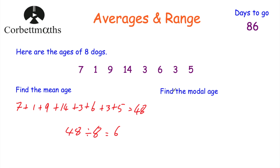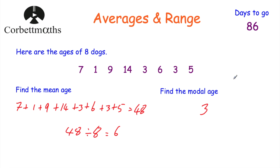The next question says find the modal age. The mode or modal age is the most common age — sometimes instead of saying 'mode' you say 'modal' and it means the same thing. As you can see, three happens twice and it's the most common. So the modal age is 3 years.